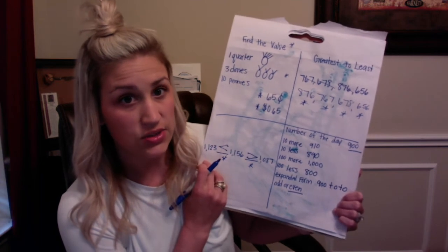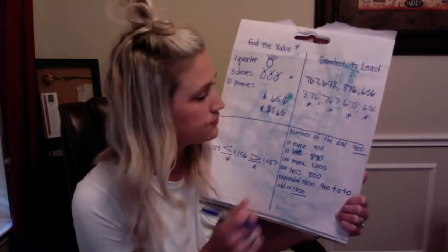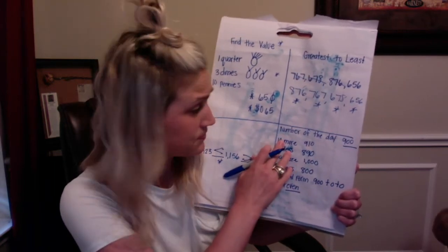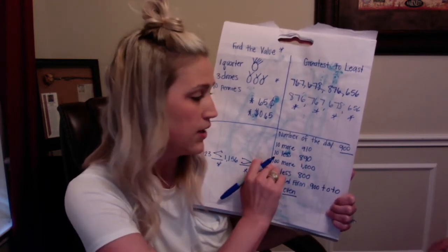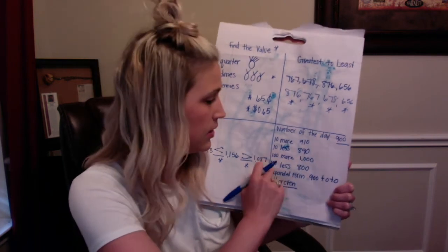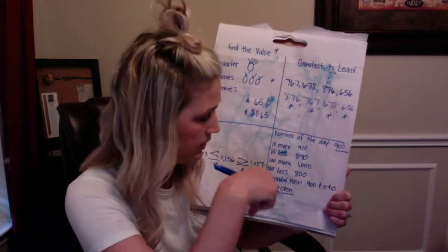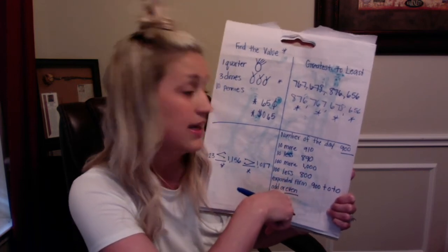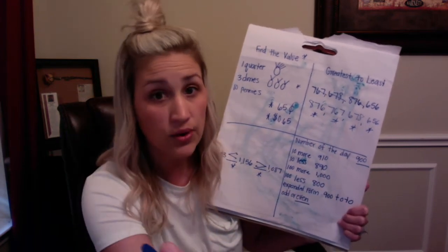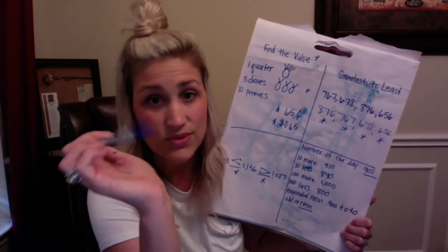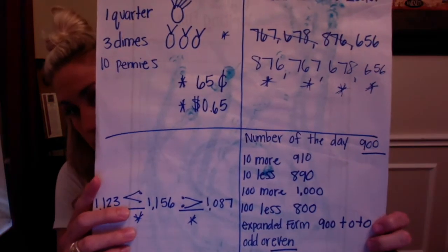For number of the day, I'm just going to give you the answers. Number of the day was 900. Remember, if you need base 10 blocks, use them. 10 more than 900 is 910. 10 less is 890. 100 more is 1,000. 100 less is 800. Expanded form: 900 plus 0 plus 0. It is even — remember, because we look at the ones place. Zero. If I don't have any brownies and you don't have any brownies, we're even. We both don't have anything. So 0 is an even number.